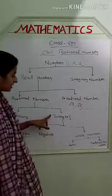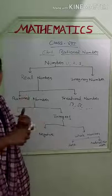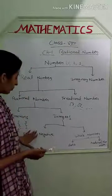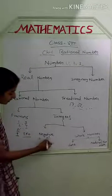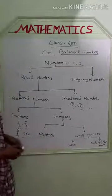Now, come to integers. What is an integer? There are two types of integers: one is positive and the other is negative integers. Negative integers include numbers like minus 1, minus 2, minus 13 — these are negative integers. Positive numbers, also called whole numbers, are 1, 2, 3, 4 — these are positive numbers.